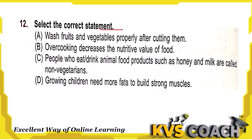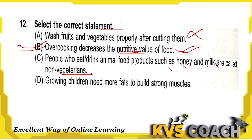Question 12: Select the correct statement. Statement A: Wash fruits and vegetables properly after cutting them — wrong, we should wash them before cutting. Statement B: Overcooking decreases the nutritive value of food — absolutely correct. Statement C: People who eat honey and milk are called non-vegetarian — wrong, these are vegetarian products. Statement D: Growing children need more fat to build strong muscles — wrong, they need more energy-giving or body-building food. Option B is the only correct statement.